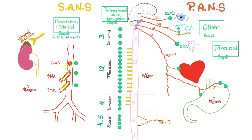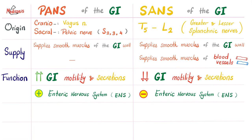Sympathetic hates the gut — it will lower and decrease motility and secretion. But parasympathetic is pro-gut; it is rest and digest, and will boost motility and secretions. So if you want your gut to move more, talk to your vagus and pelvic nerves, which will stimulate your myenteric plexus for motility.